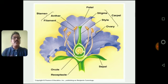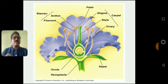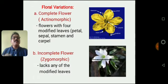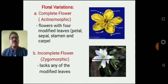This figure is taken from the Cambridge website. I am thankful to the person who gave permission for using these figures in the PowerPoint presentation. These are the floral variations. There are two kinds of flowers: Actinomorphic flower and Zygomorphic flower.